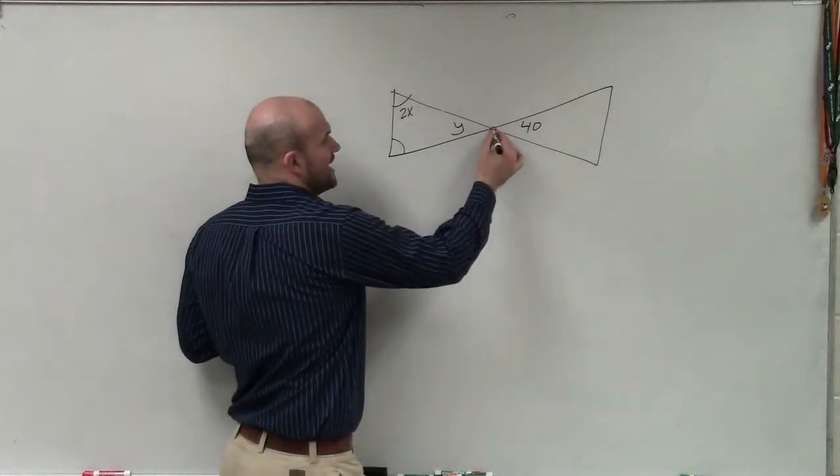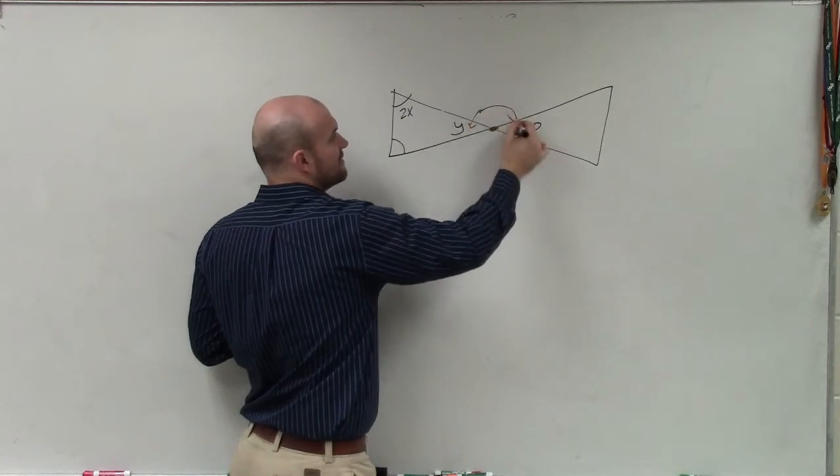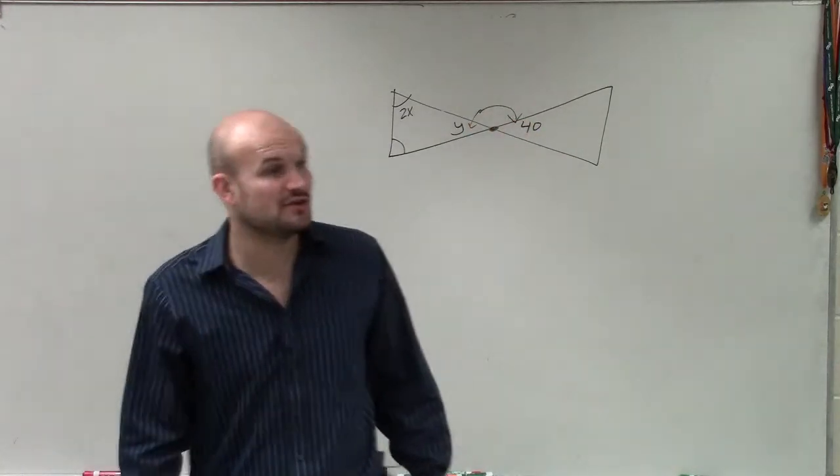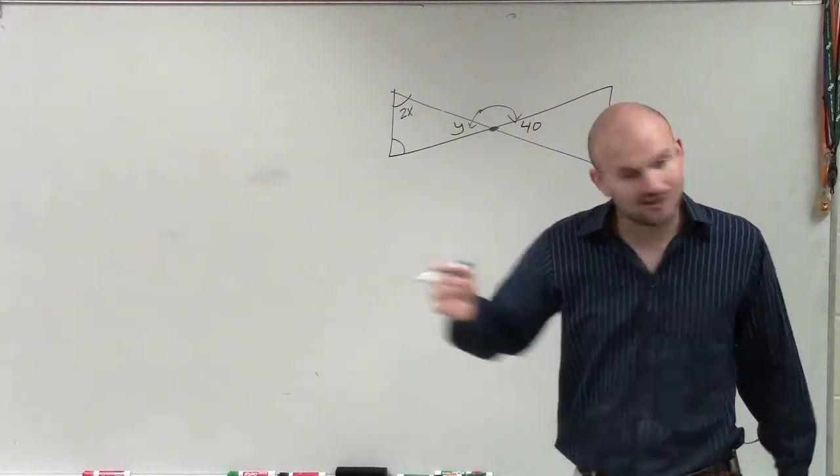Now, one thing I automatically know is I see an angle that shares a vertex but does not share a side. So when we have two angles that share a vertex but do not share a side, we know those are vertical angles.